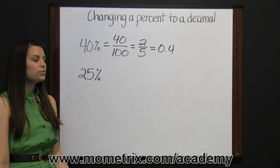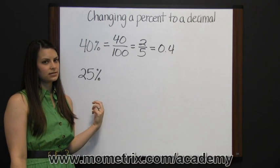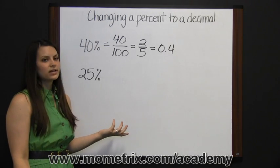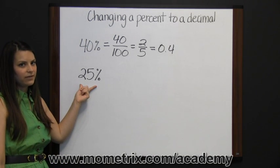The other method is to move the decimal place two places to the left in your percent, which is effectively like dividing by one hundred. We'll use that method on twenty-five percent.